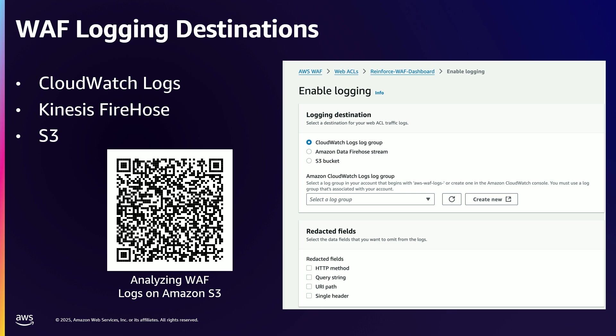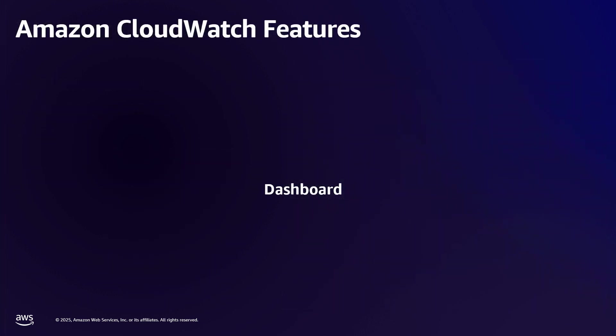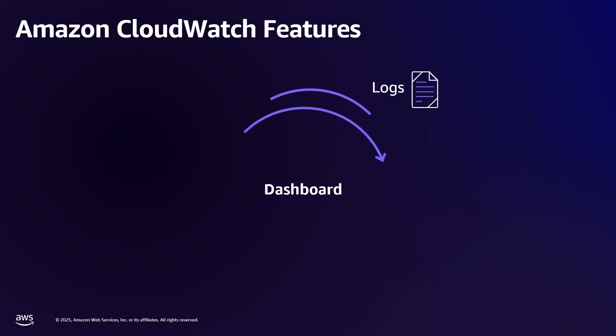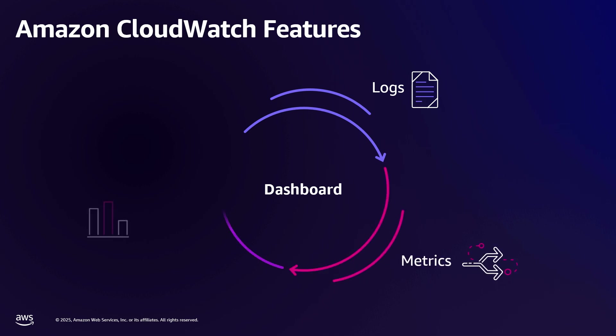If you send this to CloudWatch, like what we're doing in this use case, you can build a dashboard. Within that dashboard, you'll take all those logs coming from AWS WAF into CloudWatch Logs, create metrics from them, and from those metrics create alarms — all sitting within an AWS CloudWatch dashboard.